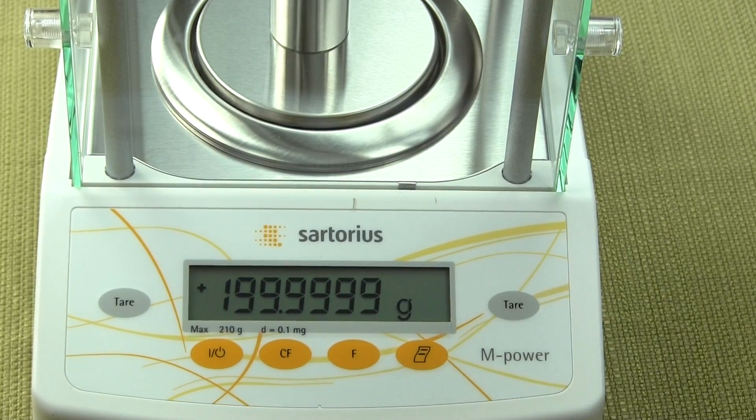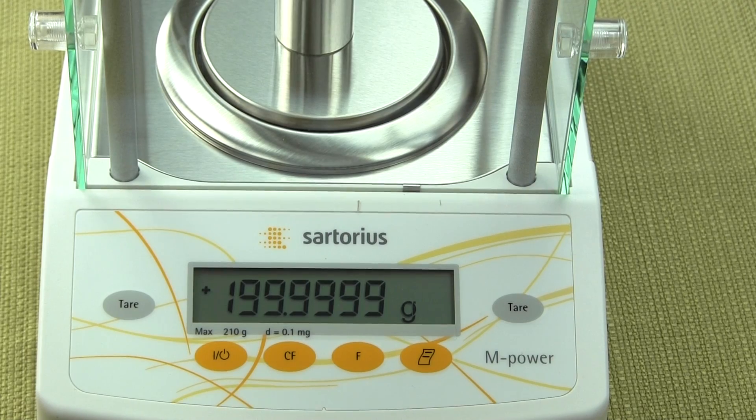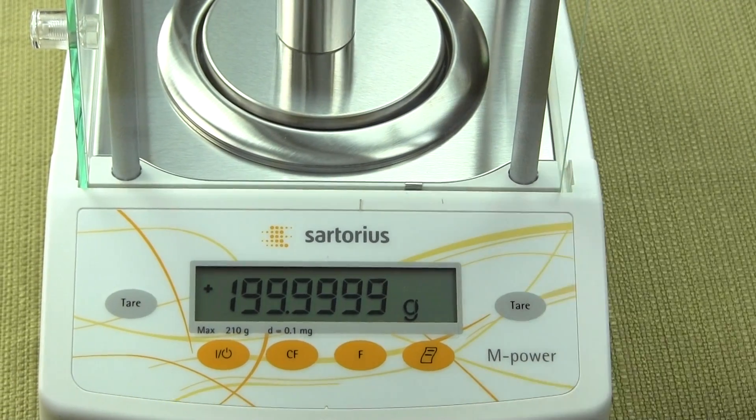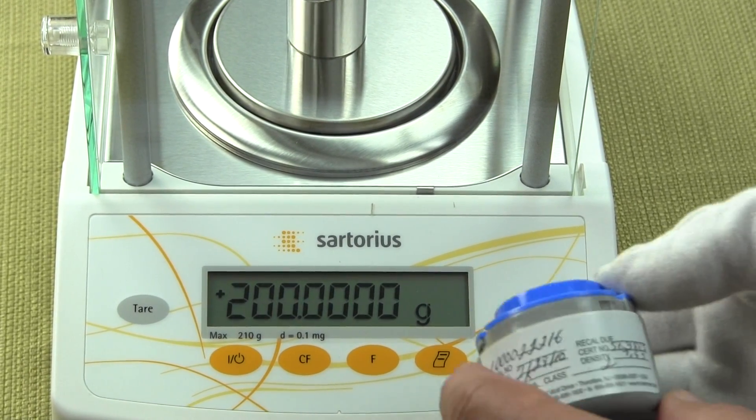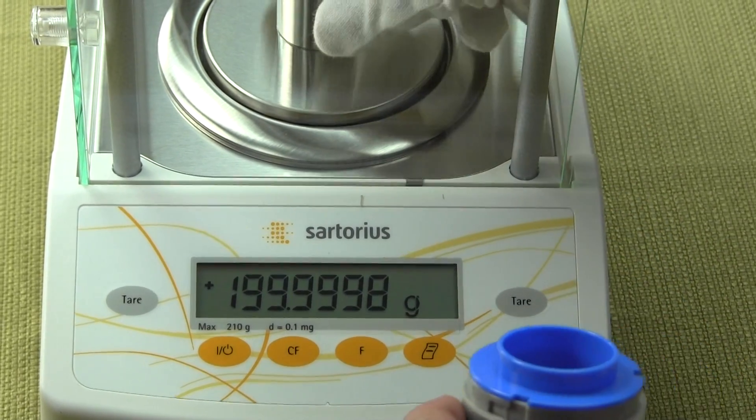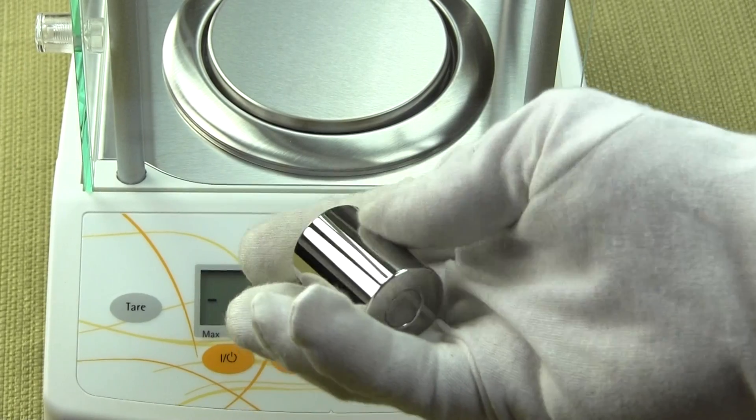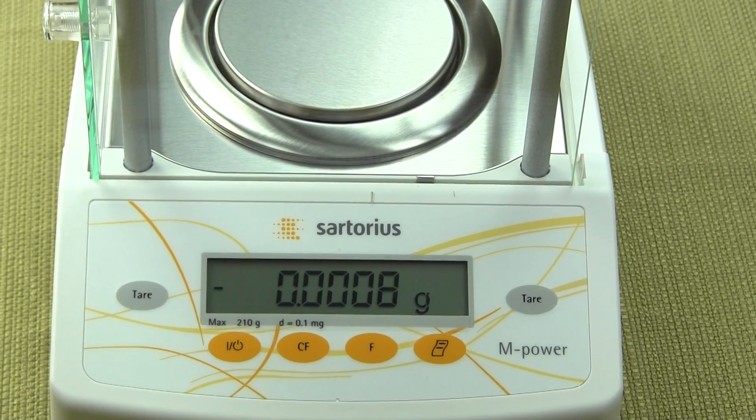Now, the calibration weights do not come with the balance itself. It's an optional accessory and we do highly recommend them. This particular weight we're using is an ASTM class 1 calibration weight. You can see it's high quality, stainless steel, satin finish. We definitely recommend you buy the calibration weight.